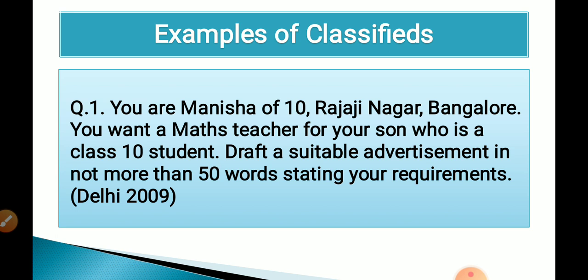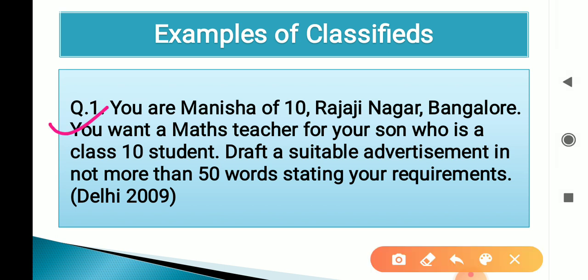First example: You are Manisha of 10, Rajaji Nagar, Bangalore. You want a maths teacher for your son who is a class 10 student. Draft a suitable advertisement in not more than 50 words, stating your requirements — what requirements you want in that teacher must be mentioned in the advertisement.